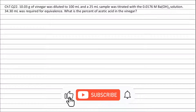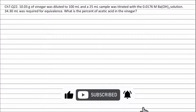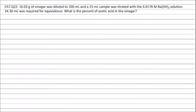Question 22. 10.03 grams of vinegar was diluted to 100 ml and a 25 ml sample was titrated with 0.0176 M barium hydroxide solution. 34.30 ml was required for equivalence. What is the percent of acetic acid in the vinegar?